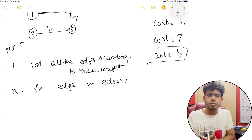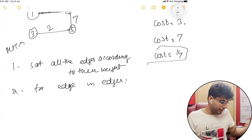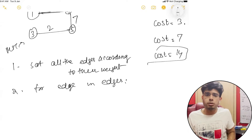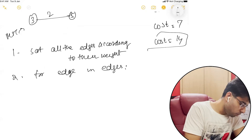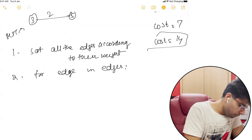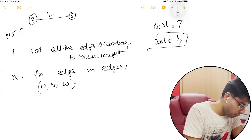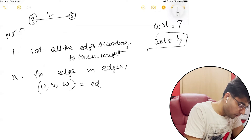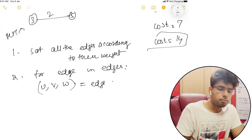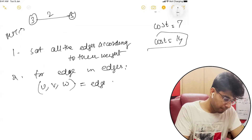You can use a comparator in Java or C++. Then you traverse through those edges. For every edge, you get U, V, and W from the edge, because the edge contains this information.